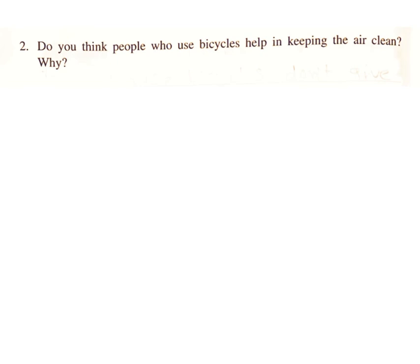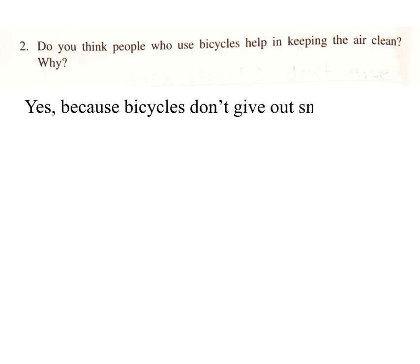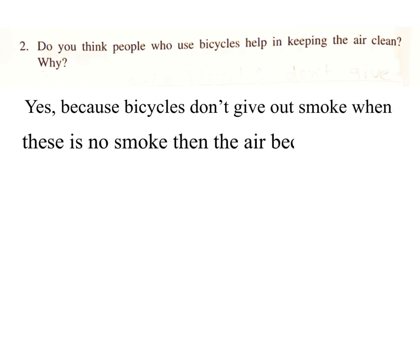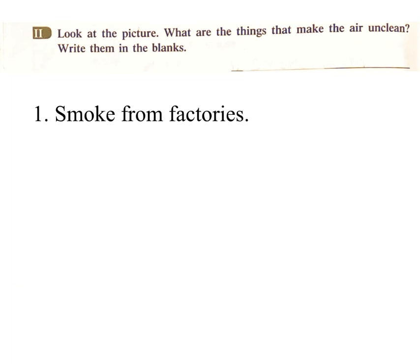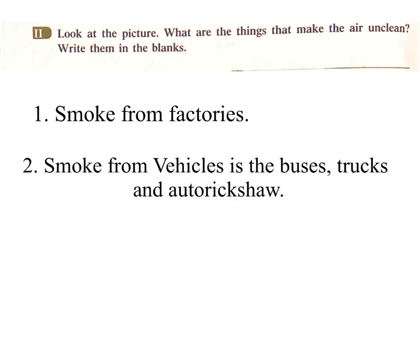Two: Do you think people who use bicycles help in keeping the air clean? Why? Yes, because bicycles don't give out smoke. When there is no smoke, the air becomes clean. Look at the picture — what are the things that make the air unclean? Write them in the blanks. Answer: One — smoke from factories. Two — smoke from vehicles such as buses, trucks, and auto-rickshaws.